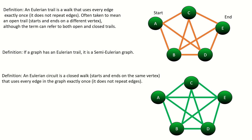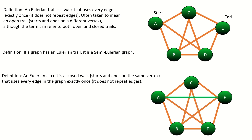An Eulerian circuit is a closed walk — that is, it is a walk that starts and ends on the same vertex, and passes through every edge in the graph exactly once. If a graph has an Eulerian circuit, we say it's an Eulerian graph.